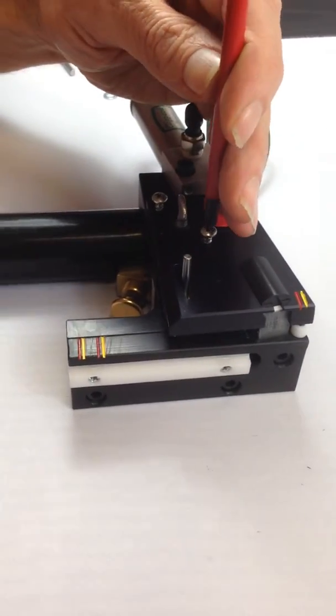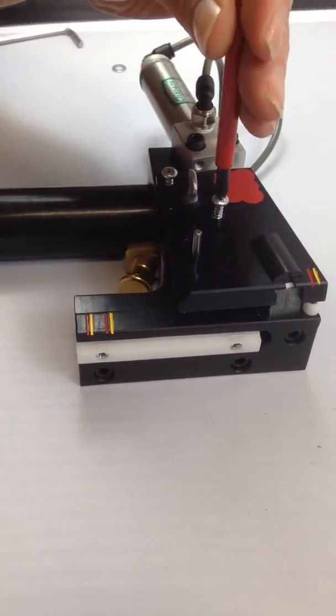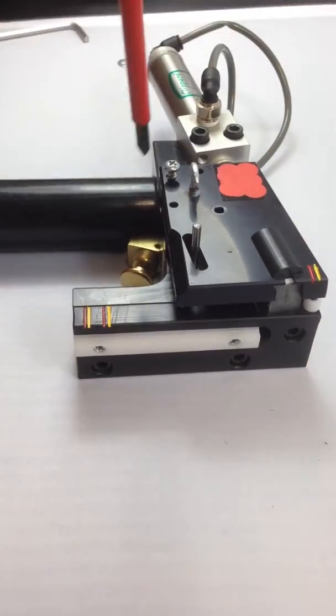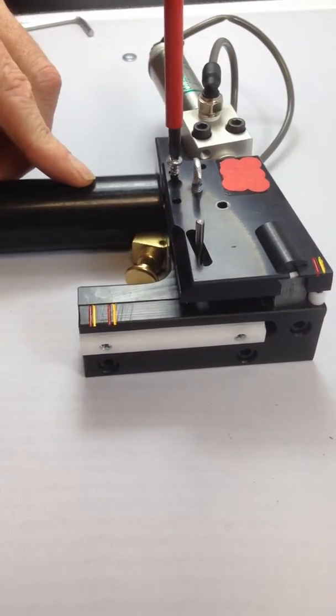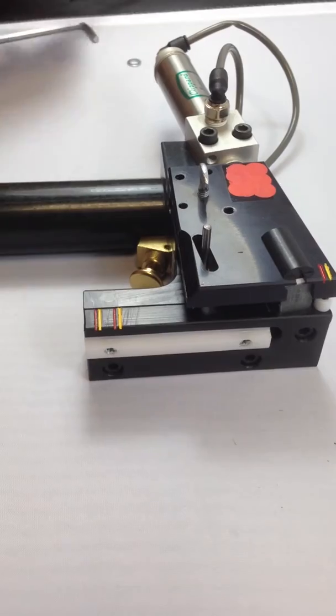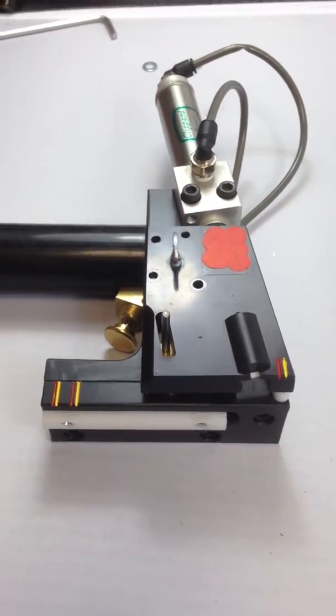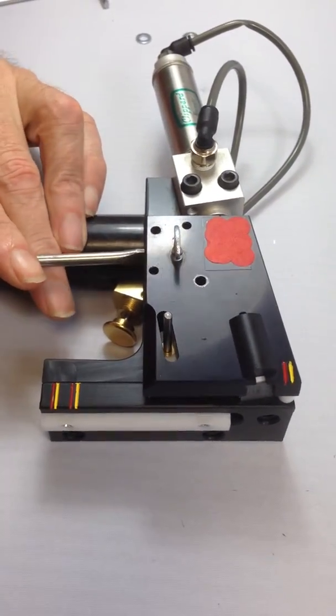Remove the faceplate via the star screws on the face of the shuttle. Use a flat head screwdriver to gently lever up the faceplate.